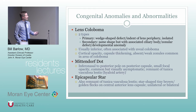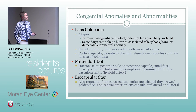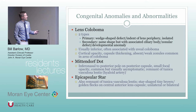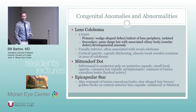Mittendorf dot is commonly seen on slit lamp exam — a small spot just off-center on the posterior surface of the capsule, usually infranasal. It's just a remnant of the tunica vasculosa lentis. Lens coloboma has two types: primary and secondary. Primary is an isolated finding; secondary is associated with a ciliary body and zonular defect. They're usually inferior and associated with a uveal coloboma — iris coloboma, and possibly choroidal as well.